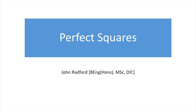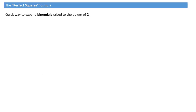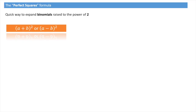In this video we learn about the perfect squares formula. There are two perfect squares formulas, and they provide us with a quick way to expand binomials raised to the power of two. With these formulas we can expand anything looking like a plus B squared or a minus B squared. For instance, by the end of this video we should be able to show that 7 plus x squared equals 49 plus 14x plus x squared.